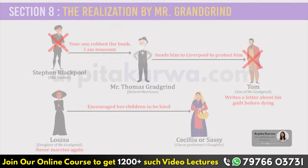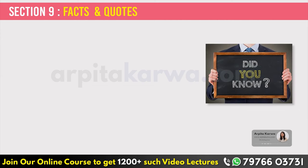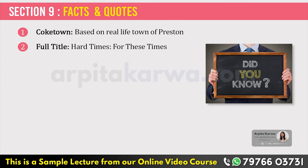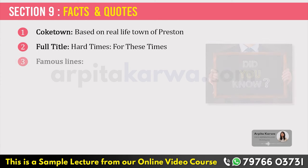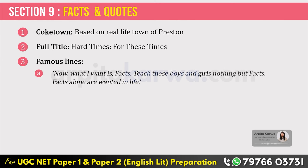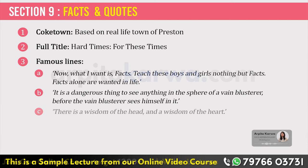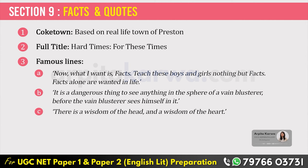With this, we end the story and discuss some facts and quotes. Coketown was based on the real-life town of Preston in Lancashire, England. The novel's full title is Hard Times for These Times. Some famous lines are: 'Now what I want is facts. Teach these boys and girls nothing but facts. Facts alone are wanted in life.' And: 'There is a wisdom of the head and a wisdom of the heart.' With this we come to the end of this lecture. Till the time we meet next, happy learning, keep loving literature, and stay tuned to arpitakarva.com.